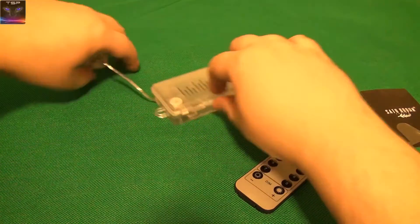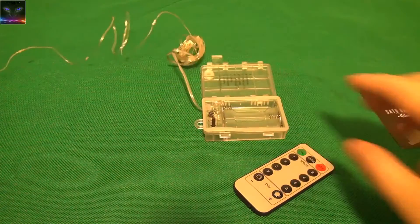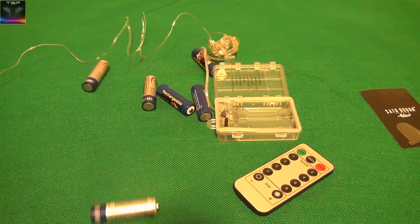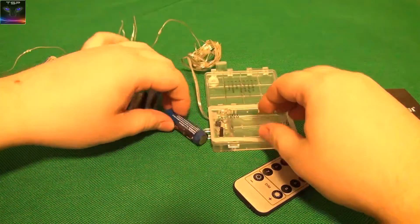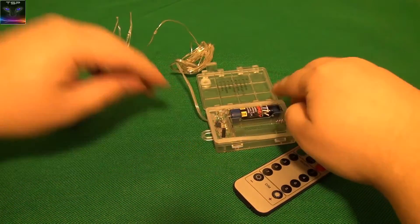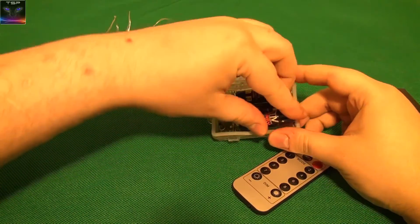Right, let's try to load some batteries in here. Looks like it takes double A's. This battery is flying all over the place now. So this battery and that battery and another disc battery.